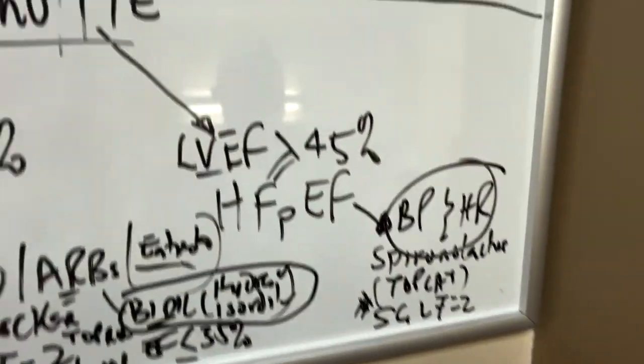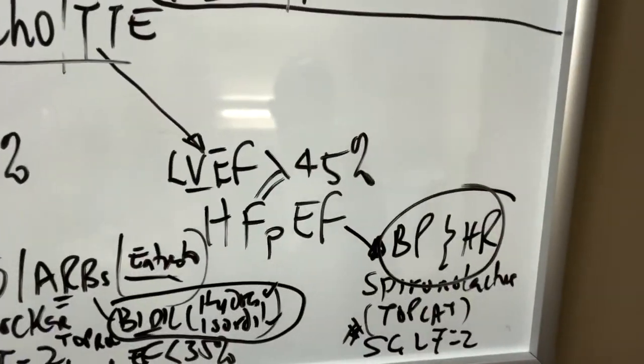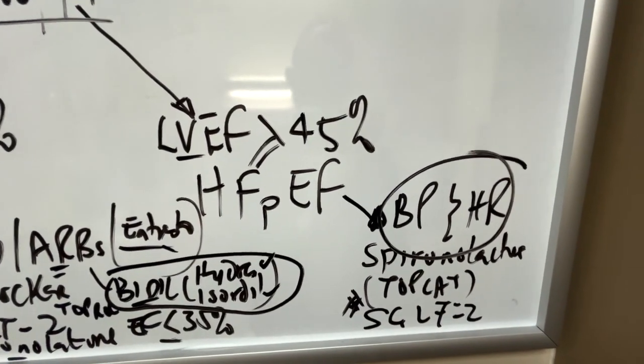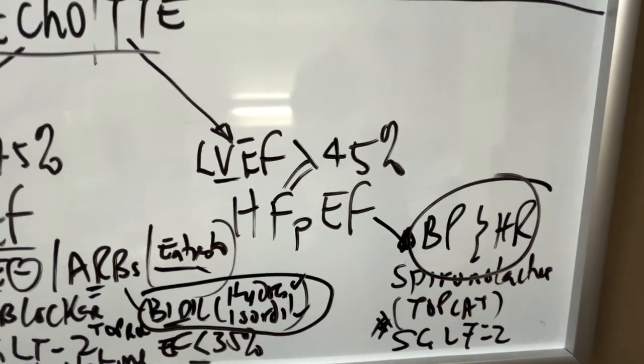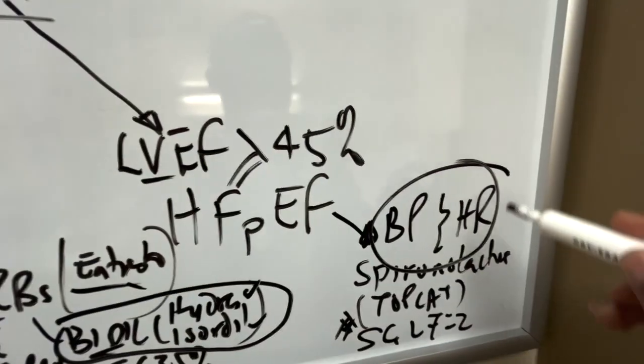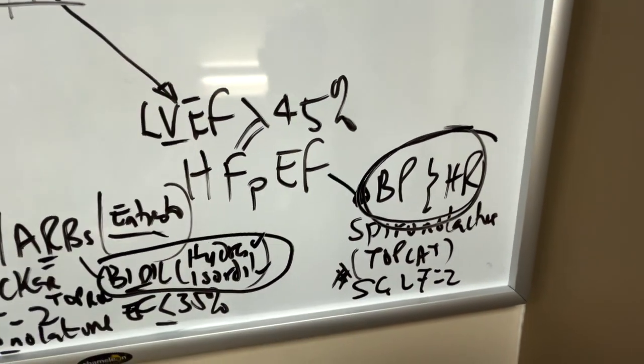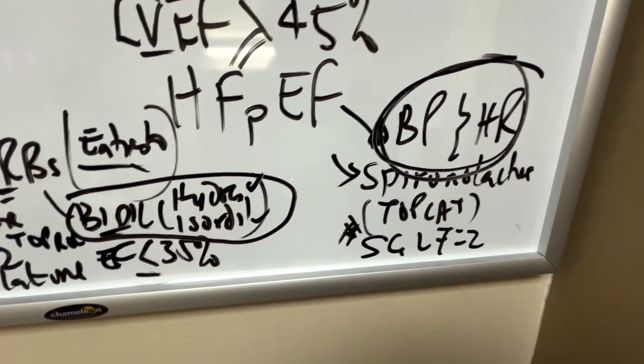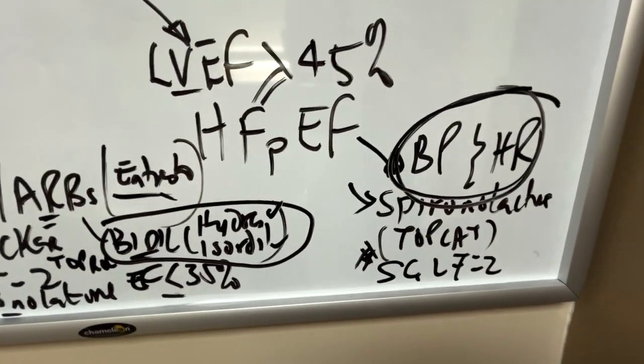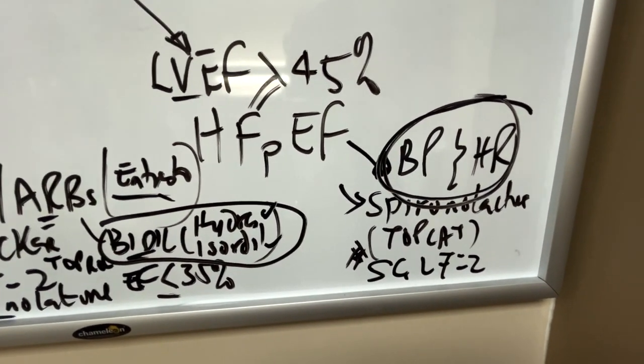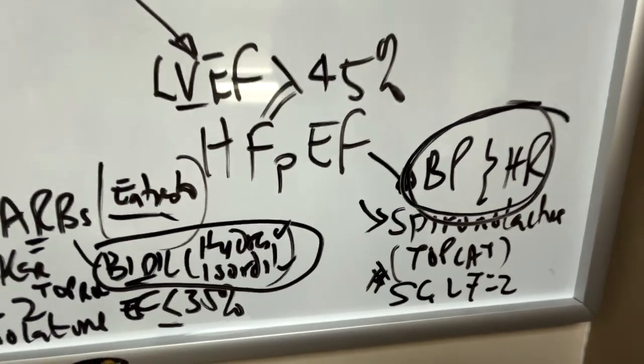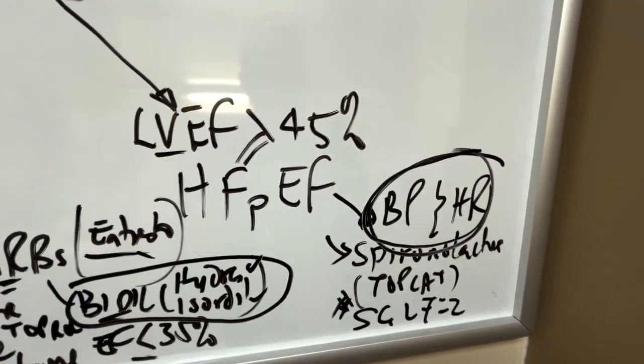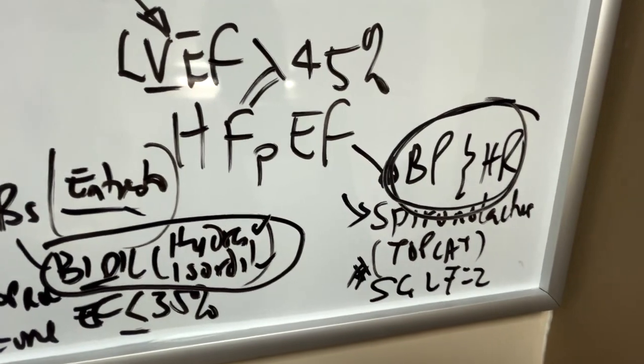If you switch over to left ventricular ejection fraction of more than 45%, where we're dealing with heart failure with preserved ejection fraction, there are not many medications that clearly provide mortality benefits. The main focus will be optimizing patient's blood pressure and heart rate. Spironolactone specifically was looked at in the TOPCAT trial and there it was suggested that it might have some mortality benefits, but it's not commonly used. You would see it thrown in sometime down the line when patients have recurrent admissions for HFpEF, but it's one of the considerations you should have in mind.